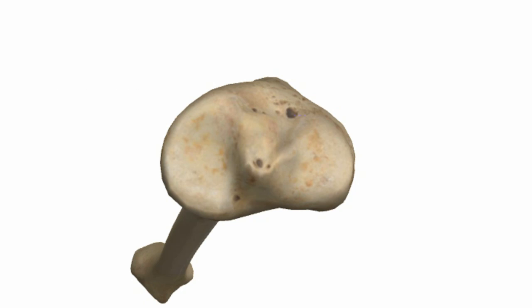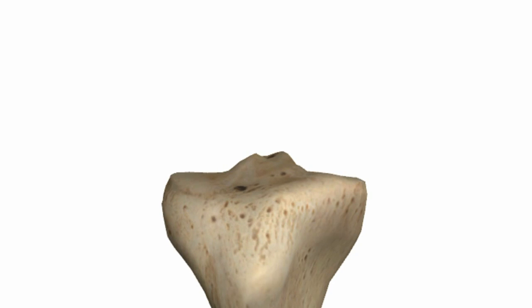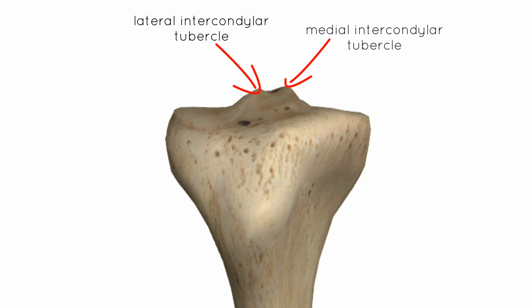Rotating the model, you can see this eminence — this protuberance of bone — which is the intercondylar eminence. Laterally, we've got the lateral intercondylar tubercle, and medially, we've got the medial intercondylar tubercle.